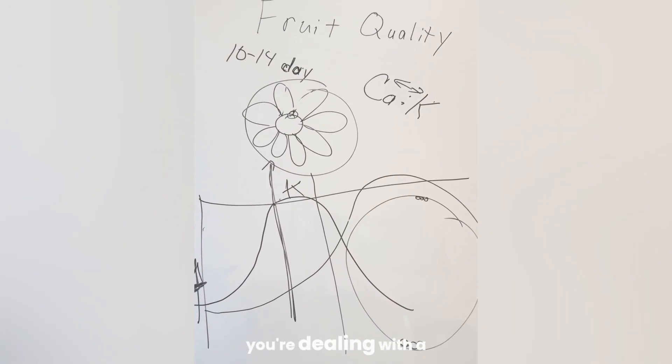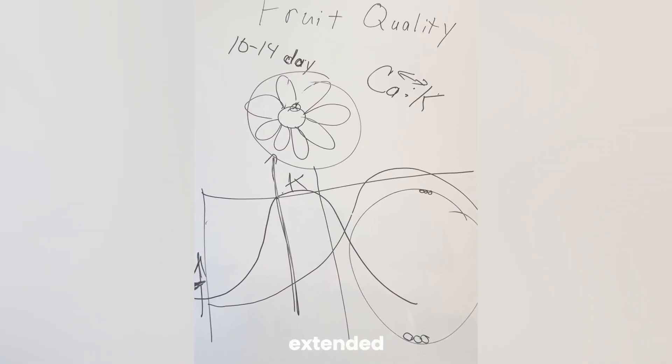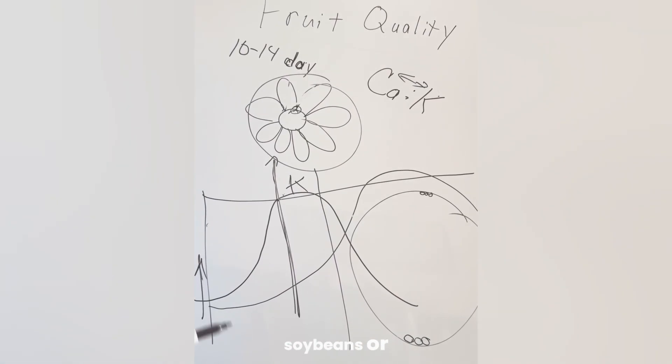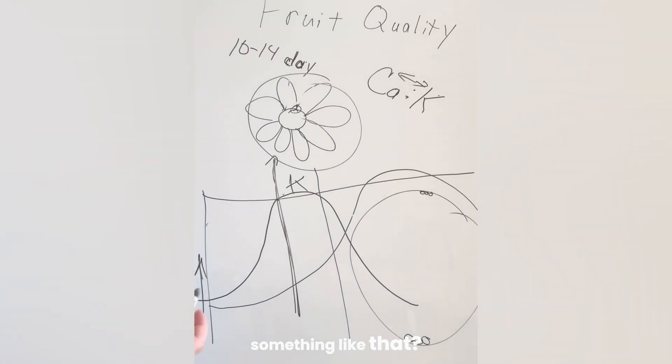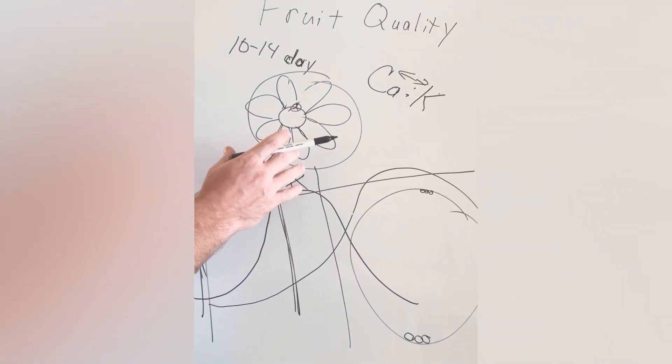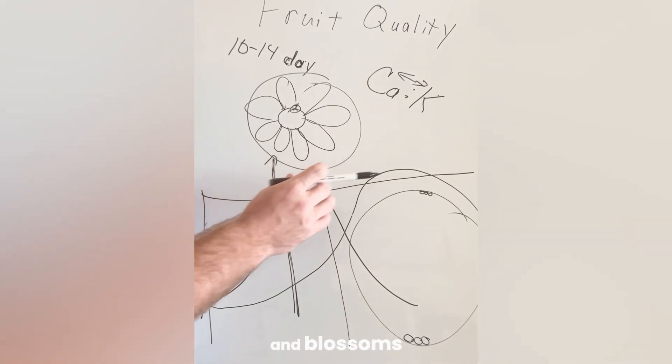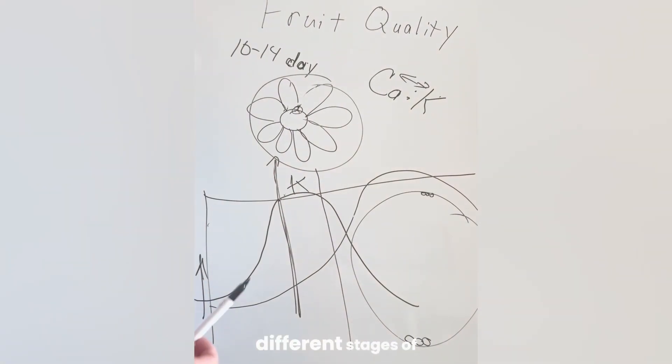But what happens if you're dealing with a crop that has extended bloom and pollination periods such as cotton or soybeans or tomatoes or watermelons? Because now you have embryos, small fruit, and blossoms all on the same plant at different stages of development.